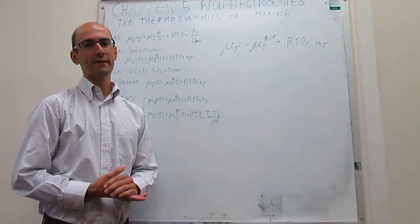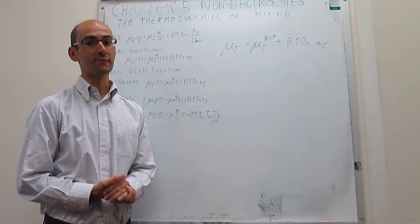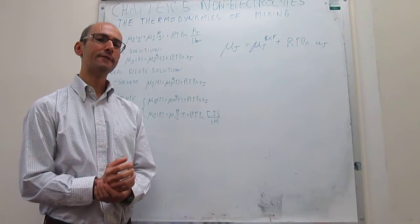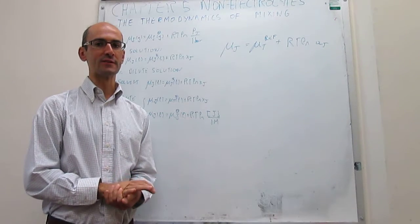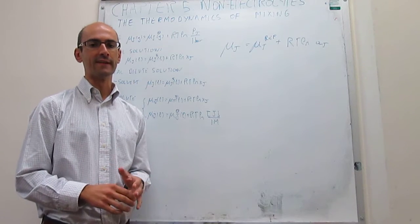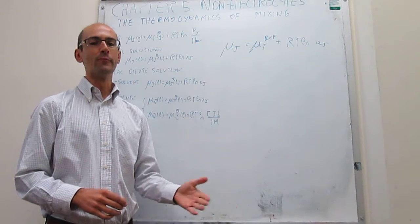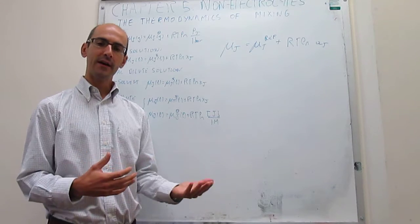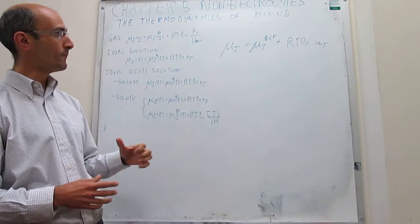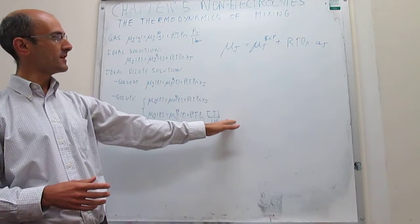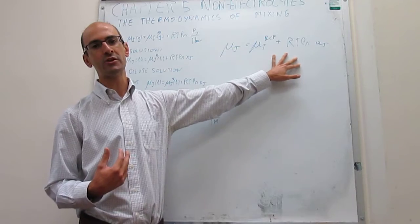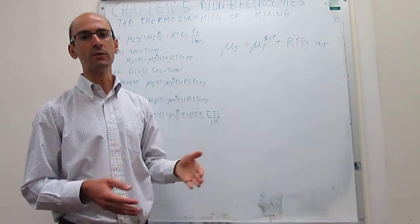In this video, we explain the thermodynamics of mixing two liquids. In the prior videos, we have explained how to write the chemical potentials under a variety of conditions: for a gas, for a liquid in an ideal solution, for the components of an ideal dilute solution, and also for real solutions. All of these chemical potentials can be grouped together into just one expression, which we can use as a placeholder for all of them.